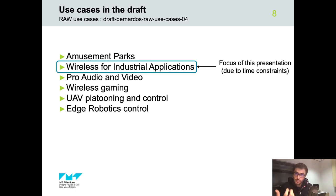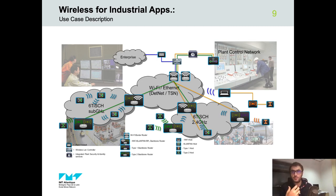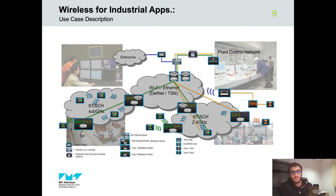Due to time constraints, I will briefly present wireless for industrial applications. Industry 4.0 represents the next industrial revolution. To enable cyber-physical systems, we need a network infrastructure able to forward critical flows, guaranteeing both ultra-reliable and bounded end-to-end latencies.